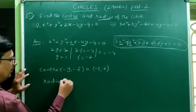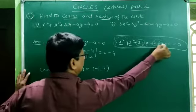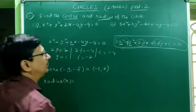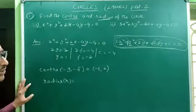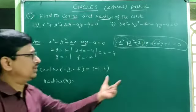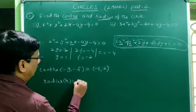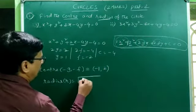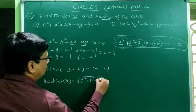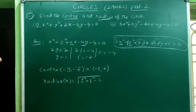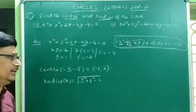Now we have to find the radius. The radius r is given by the formula: r = √(g² + f² − c).